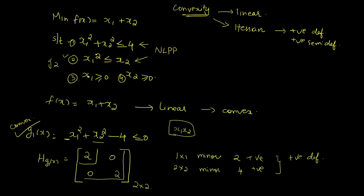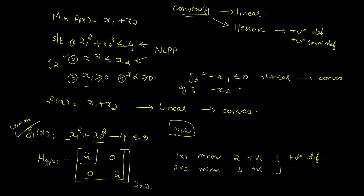For g3: x1 ≥ 0 rewritten as −x1 ≤ 0 — it is linear, so it is convex. For g4: x2 ≥ 0 rewritten as −x2 ≤ 0 — also linear, so also convex. Our conclusion: both the objective function and all constraints are convex, so this is a convex optimization problem.